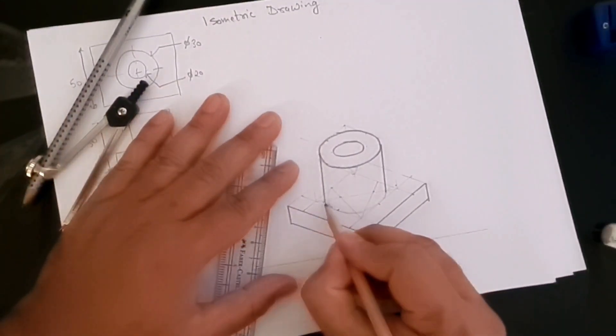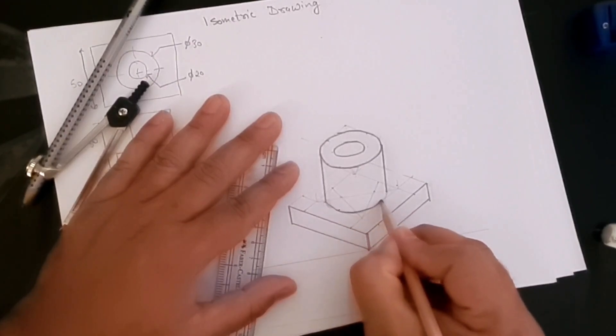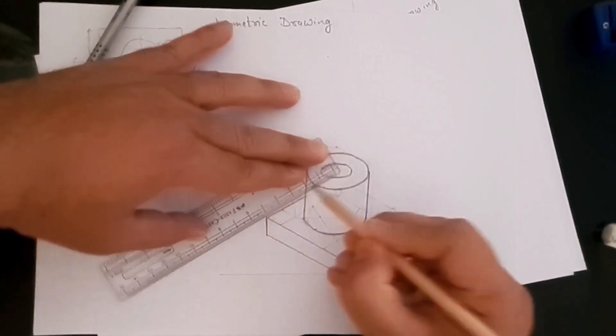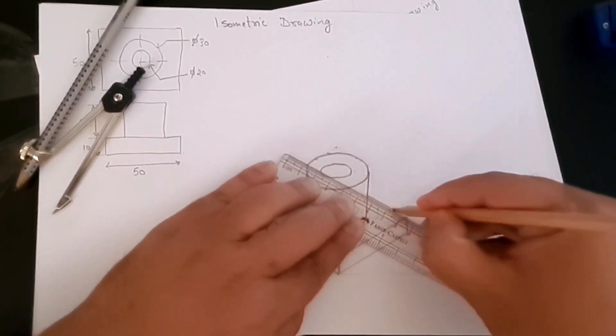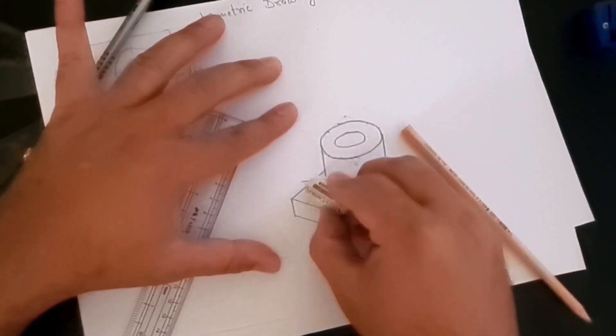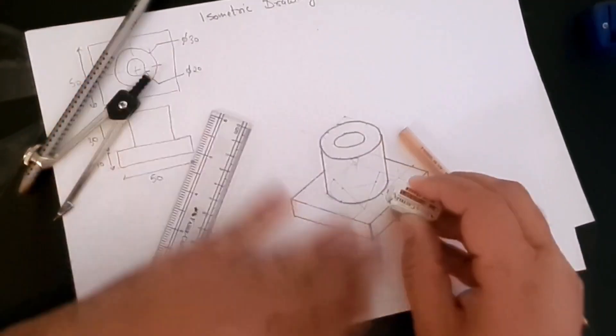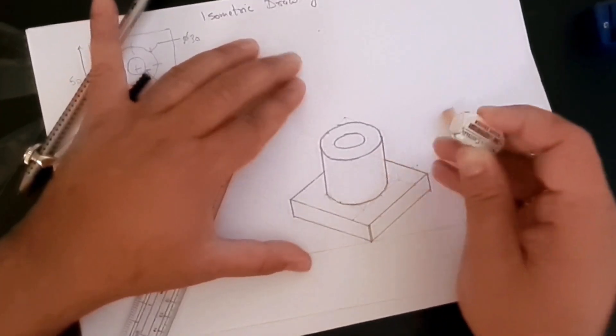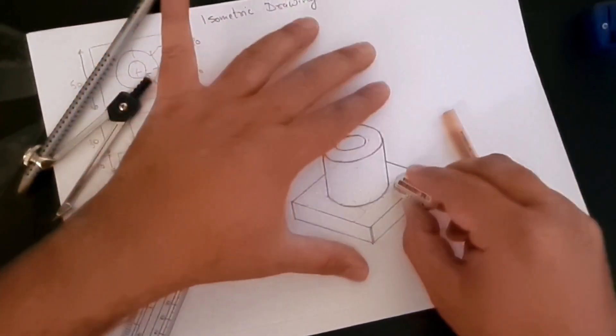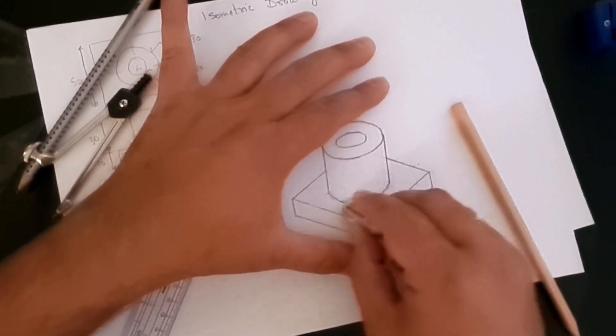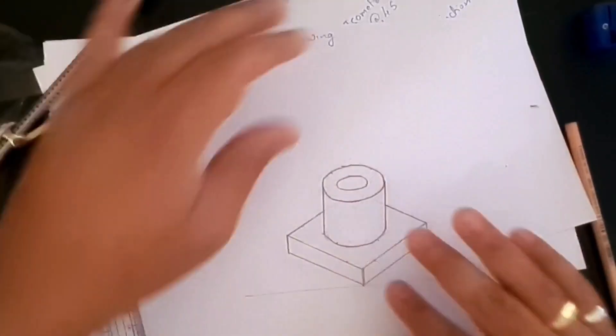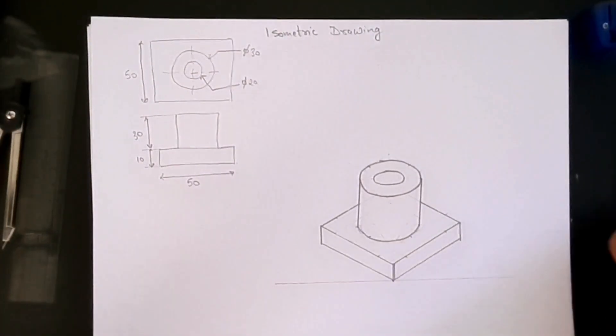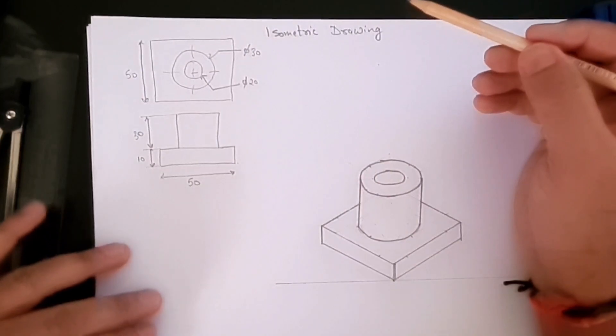So let's make this arc a bit dark and then finish it up with drawing these lines darker as well. And then I can rub off all the construction lines so that our drawing looks a bit tidy. So that's how you'd create an isometric drawing from the orthographic sketches or the orthographic drawing that you have created.